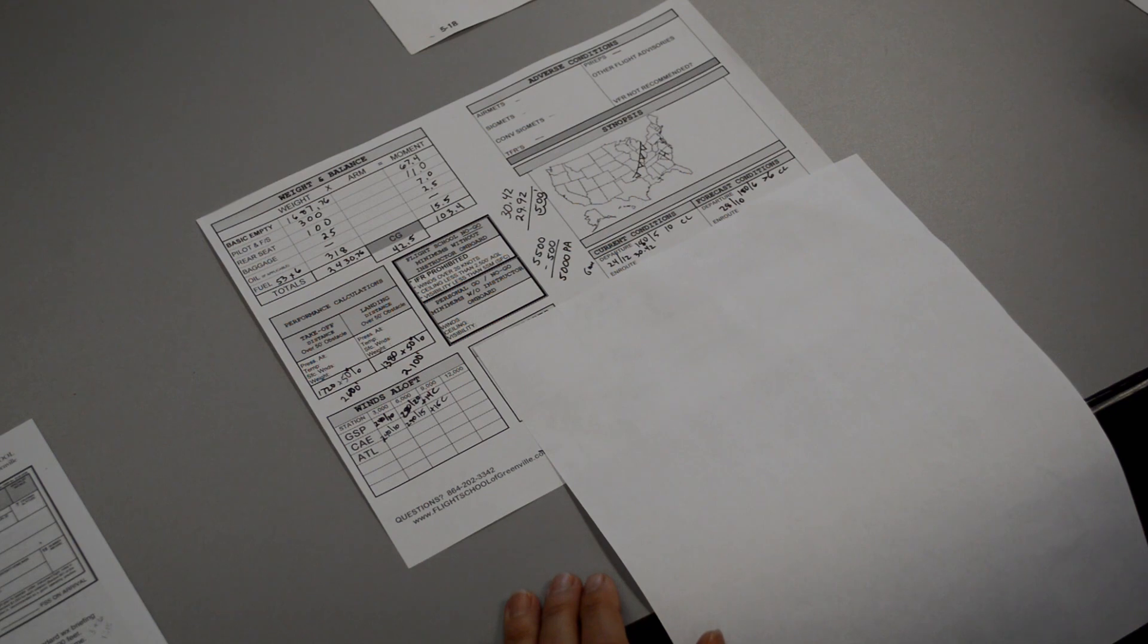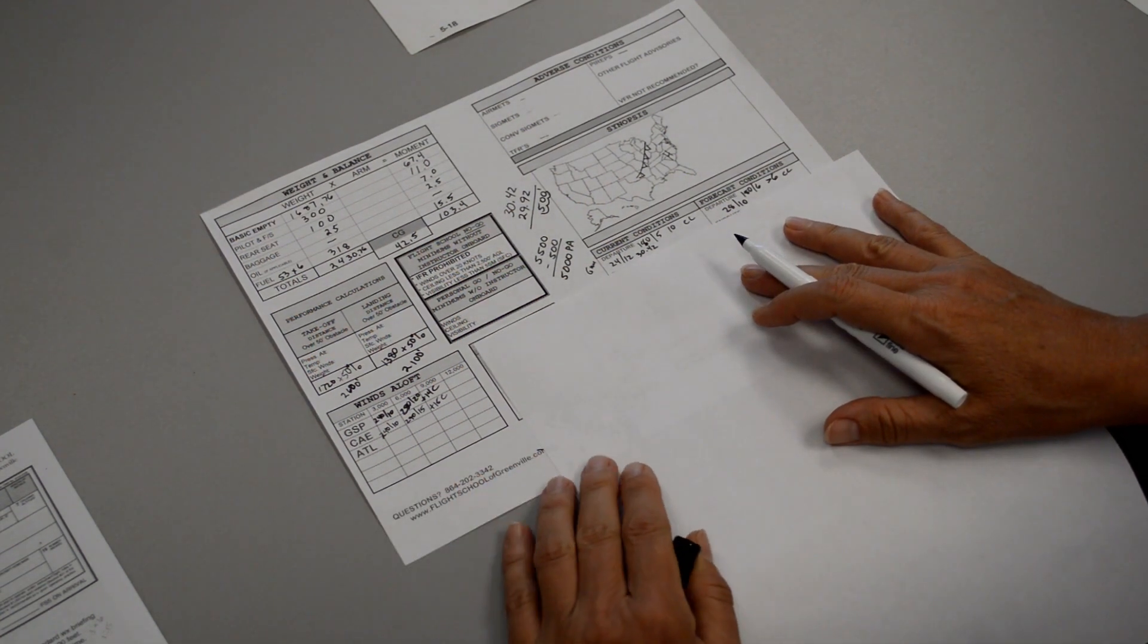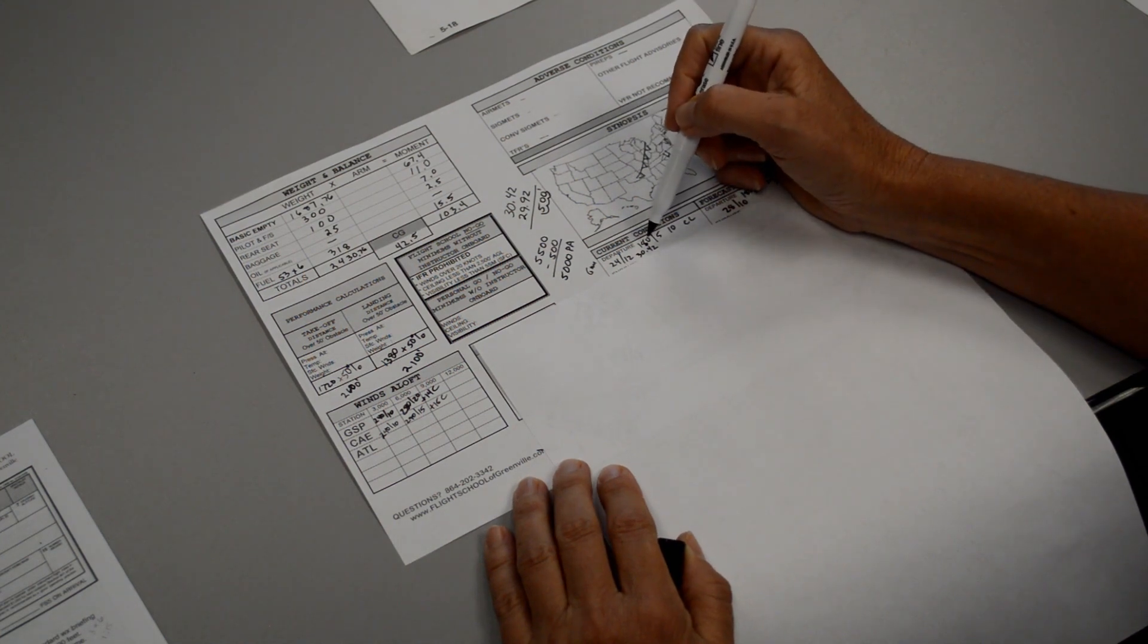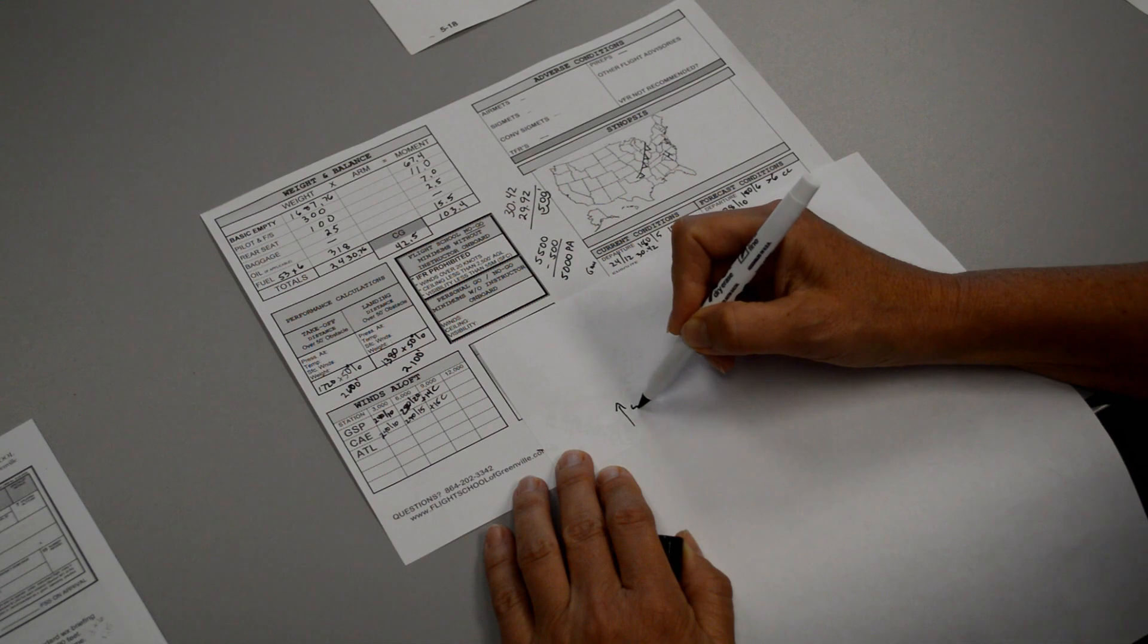The seventh step on our cross-country flight plan involves calculating winds for our climb portion. When we departed Greenville, the weather briefer told us the winds were coming out of 180 at 5 knots.